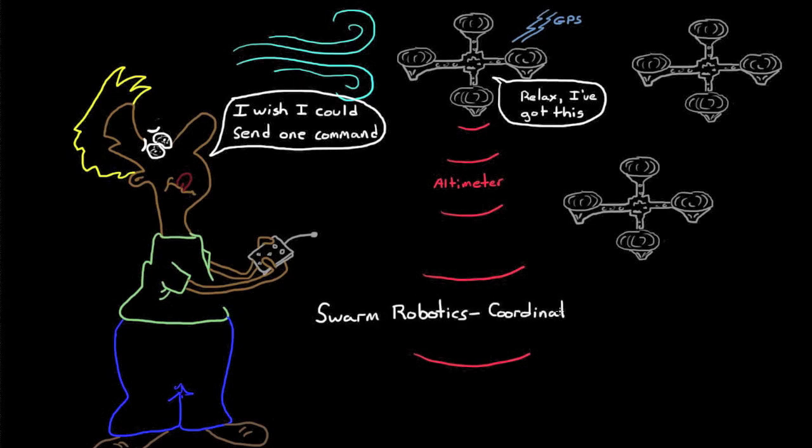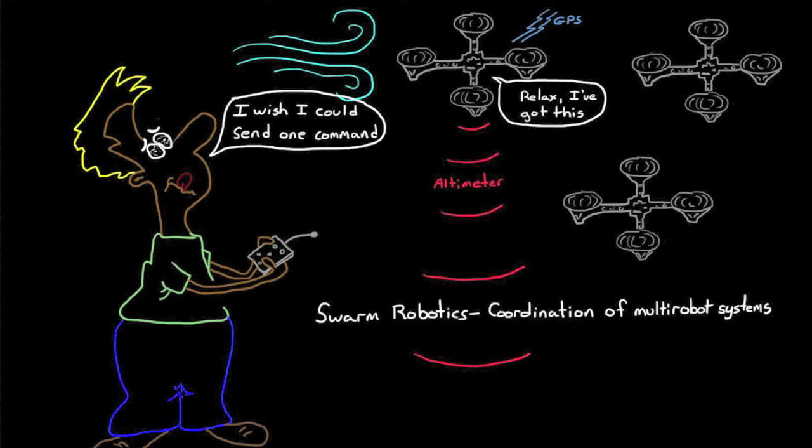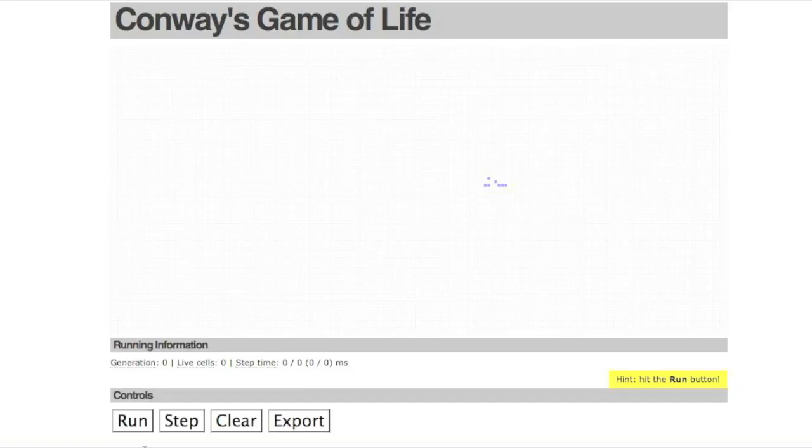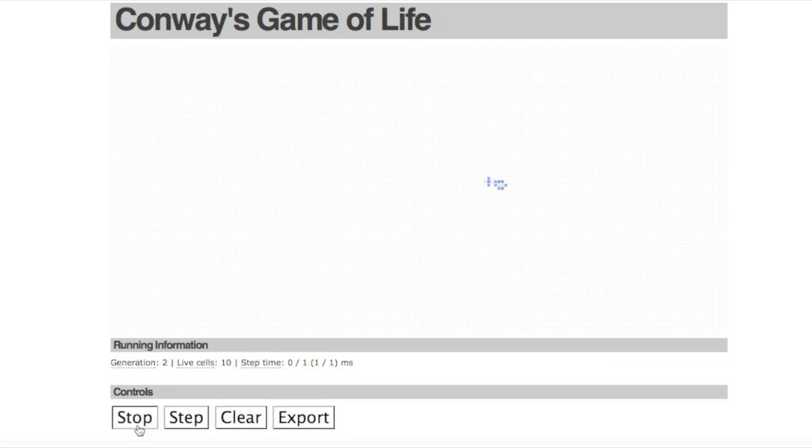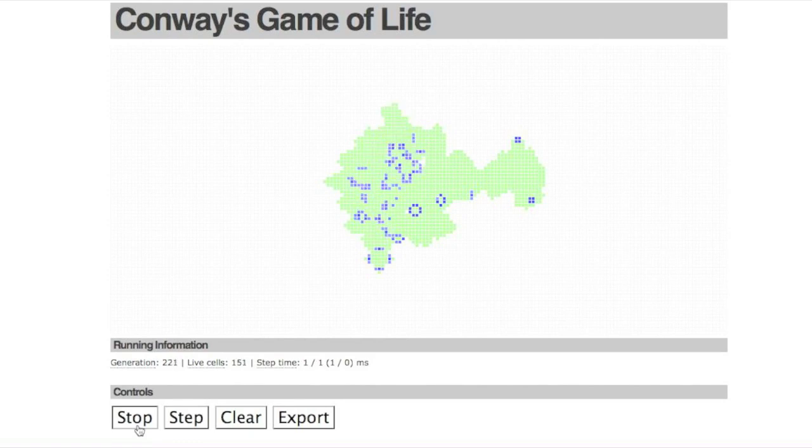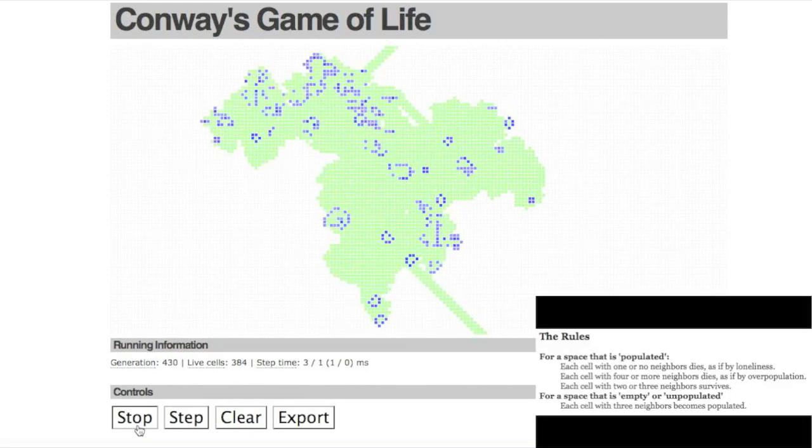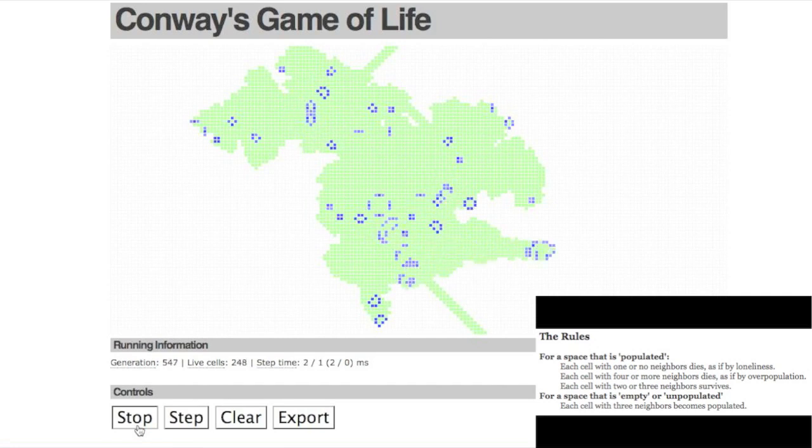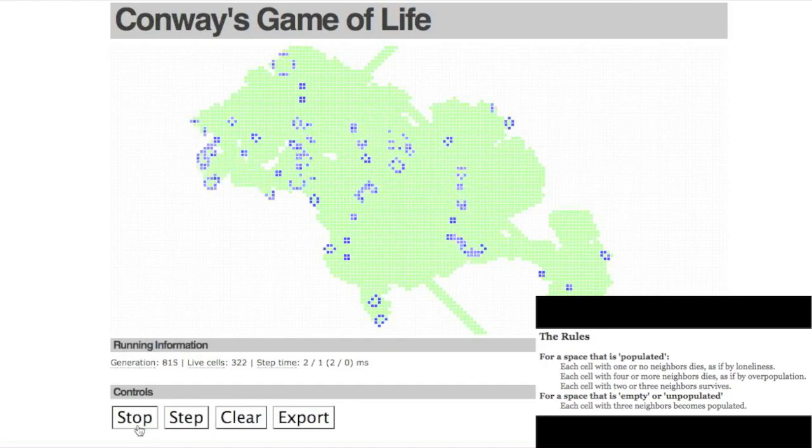Swarm robotics deals with the coordination of multi-robot systems. The idea is that by setting relatively simple individual rules that each robot can follow, a desired global behavior emerges. A well-known example of emergent behavior is Conway's game of life. Here, pixels seem to take on lives of their own based on just a few simple rules. And so it stands to reason that we can get swarms of robots to take on lives of their own with a similar set of simple rules.